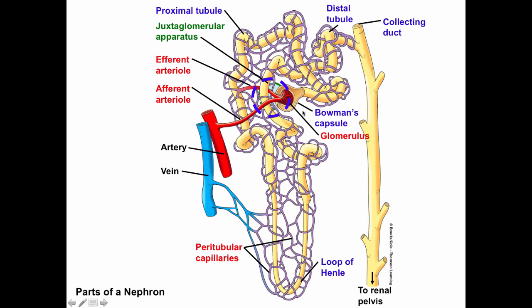Looking at an idealized cartoon representation of the average nephron, the parts colored in yellow are the tubular components, while the parts colored in red, blue, and purple are the vascular components. Starting at the center, there is a claw-shaped yellow structure called Bowman's capsule. Bowman's capsule is wrapped around a tuft of capillaries called the glomerulus.